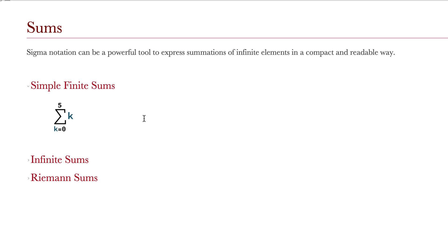This notation just takes each integer k from k equals 0 to k equals 5 and takes their sum. If we evaluate that cell, we get 15, which makes sense given that 1 plus 2 plus 3 plus 4 plus 5 is equal to 15.